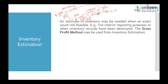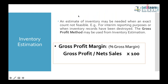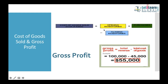When we have beginning inventory, purchases, and a portion sold, we can calculate gross profit. Gross profit is the difference between sales and cost of goods sold. Cost of goods sold is calculated using the formula: beginning inventory plus purchases minus ending inventory. This formula gives you cost of goods sold, which is then deducted from sales to give gross profit.